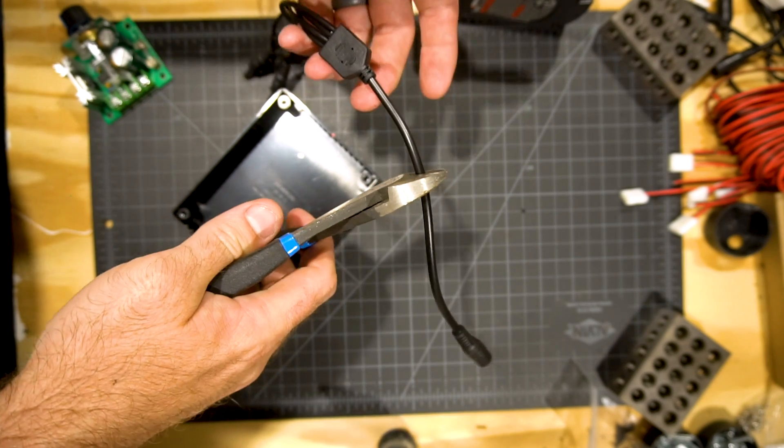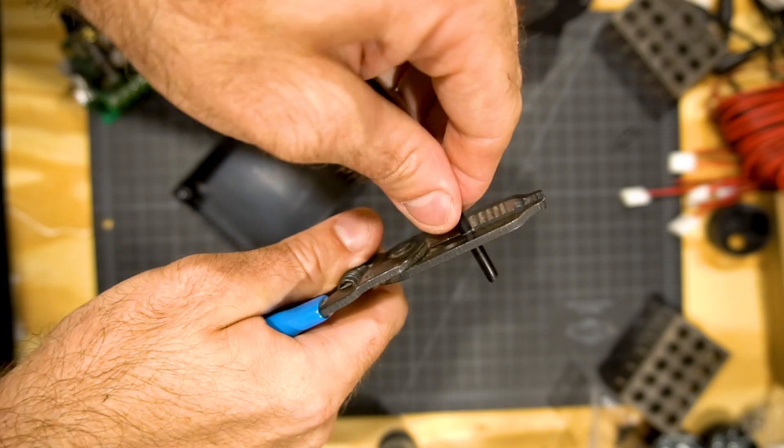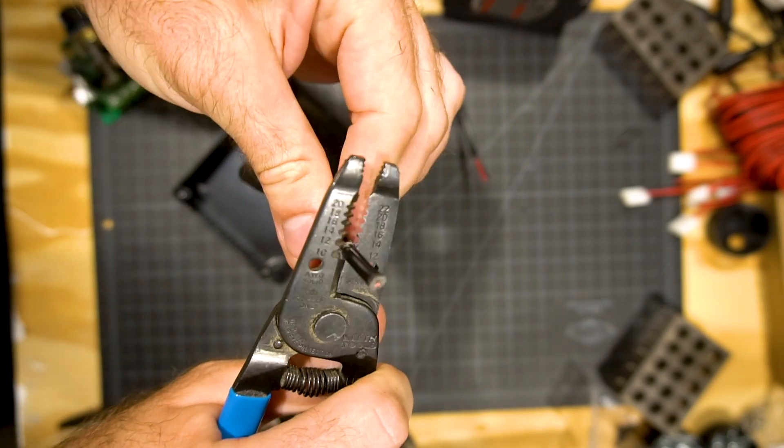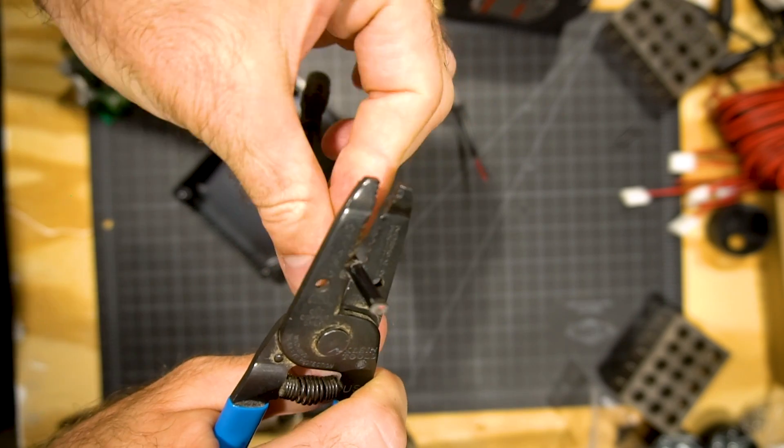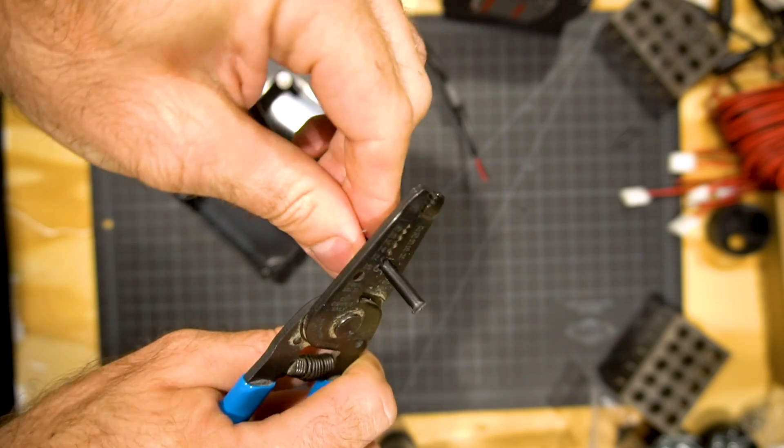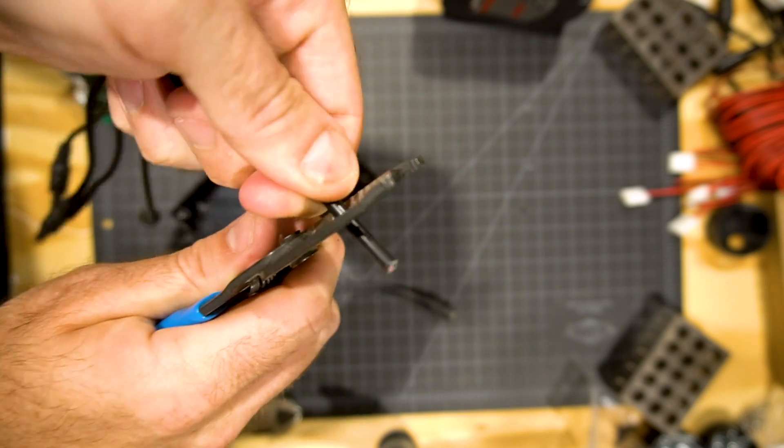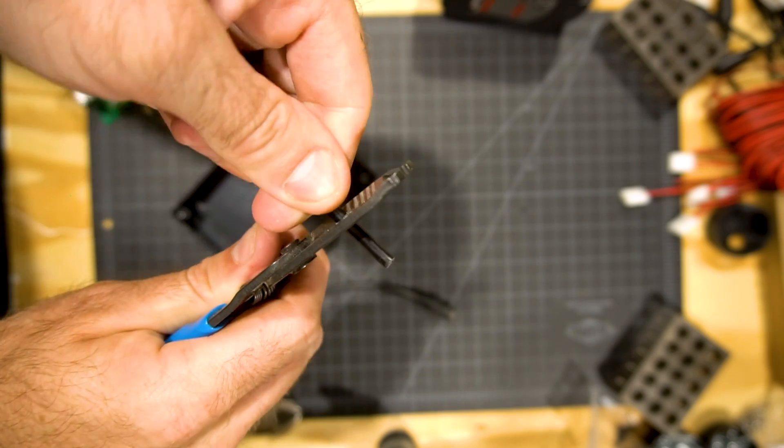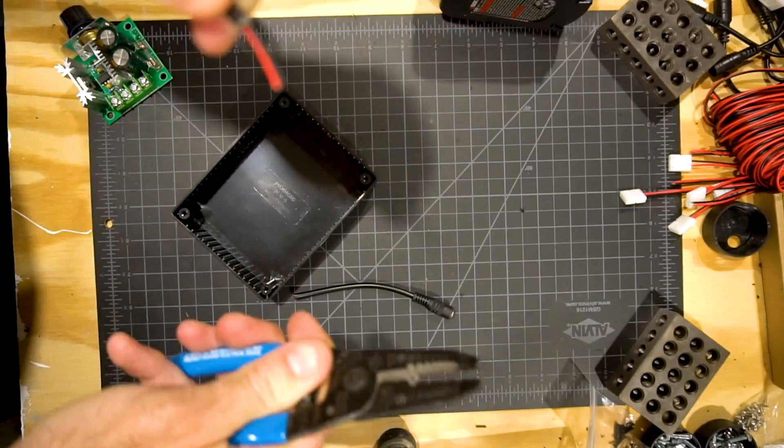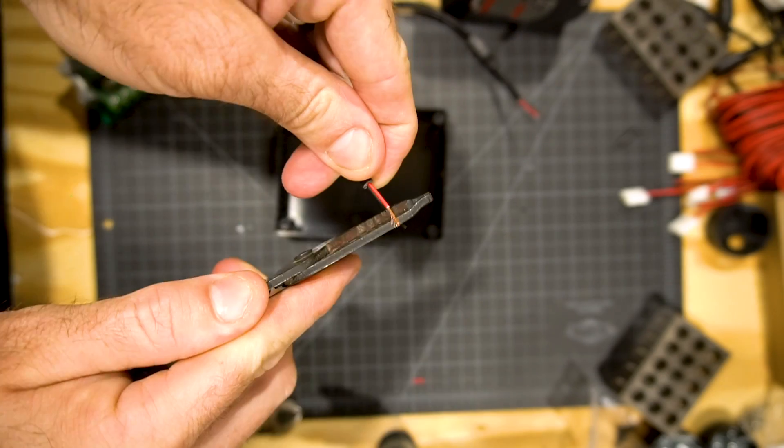Grab your adapter or splitter, and cut the end that has a single strand on it. We're going to use both pieces of this adapter. Grab the end of the splitter, strip the wire we just cut, and pull the wires apart just a little bit. Grab your other end, and do the exact same thing. Now, strip all four of the wires that we have access to.